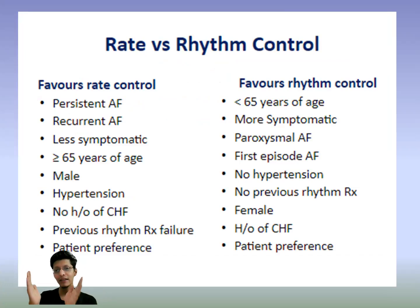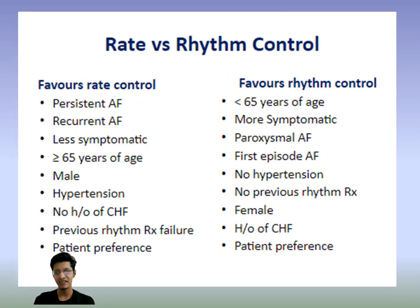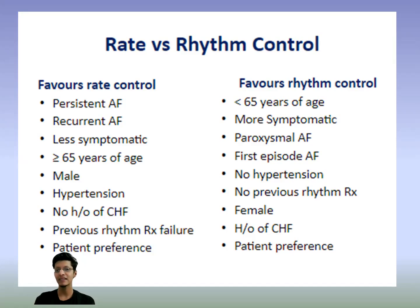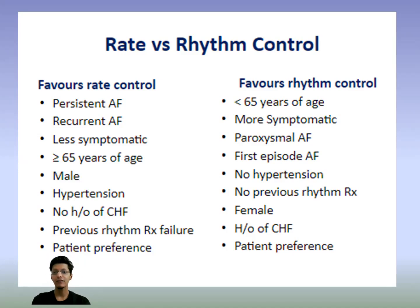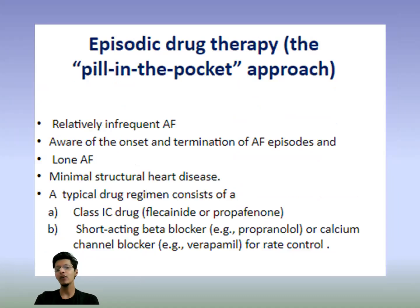Rate control is favored when the patient is in persistent AF, is less symptomatic, age is more than 65 years, male, hypertensive, with or without history of congestive heart failure, and based on patient preference. Rhythm control is favored when age is less than 65 years, patient is more symptomatic, has paroxysmal AF, first episode of AF, no hypertension, no previous rhythm control, female sex, or history of congestive heart failure.